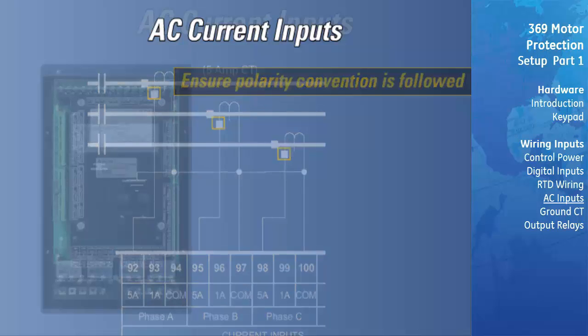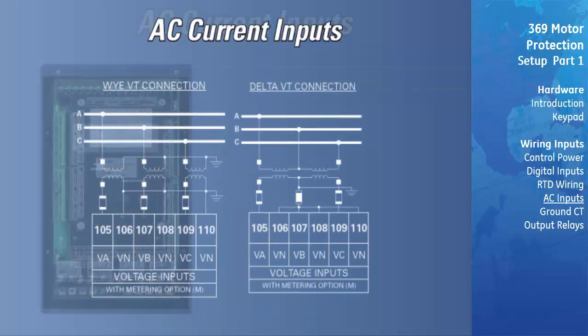Phase Voltage Input Wiring: The 369 has three channels for AC voltage inputs which are only enabled when the metering option, M, is ordered. Each input has an internal isolating transformer. The maximum VT ratio is 240 to 1. The 369 can accept either open delta or Y-connected VTs. The voltage channels are internally connected in a Y, which means that the jumper shown on the delta connection between the phase B input and the VT neutral terminals must be installed.